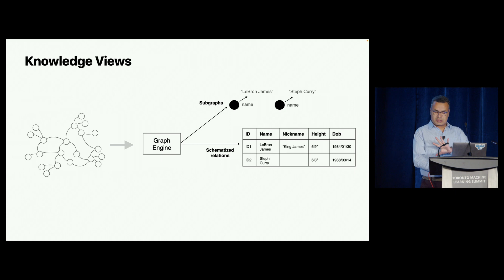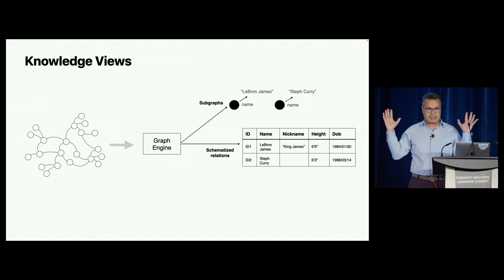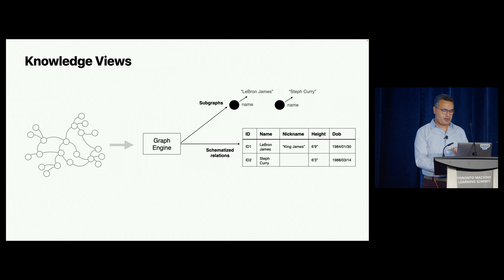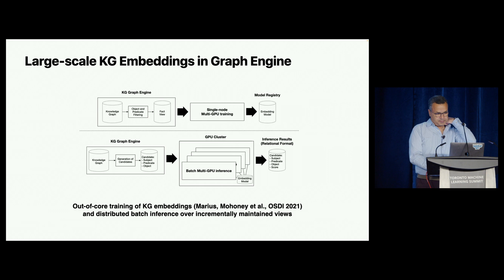The graph engine is capable of giving views. What exists behind that logical picture is many storage systems representing the graph. From that I can give you a relational model, sub-graphs, embeddings, and representations.